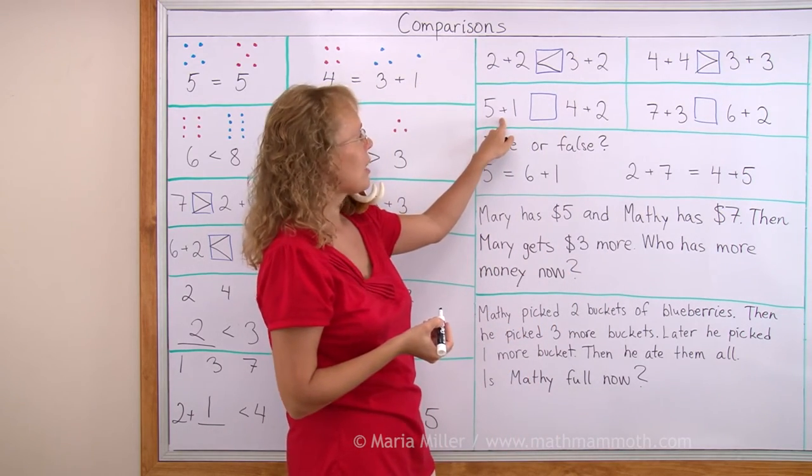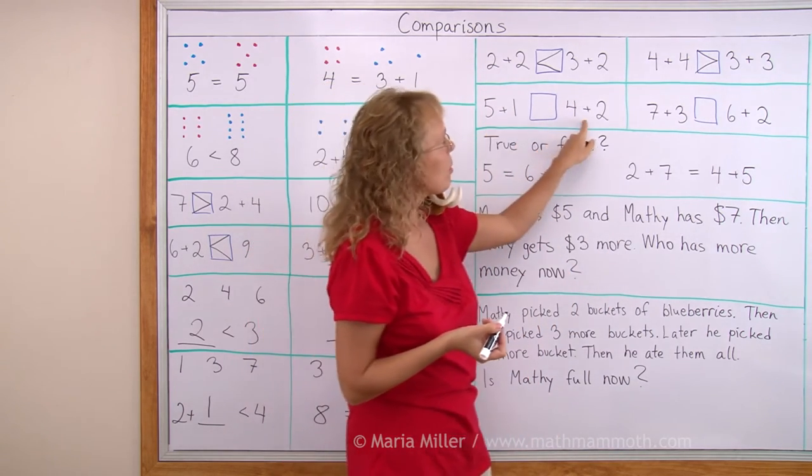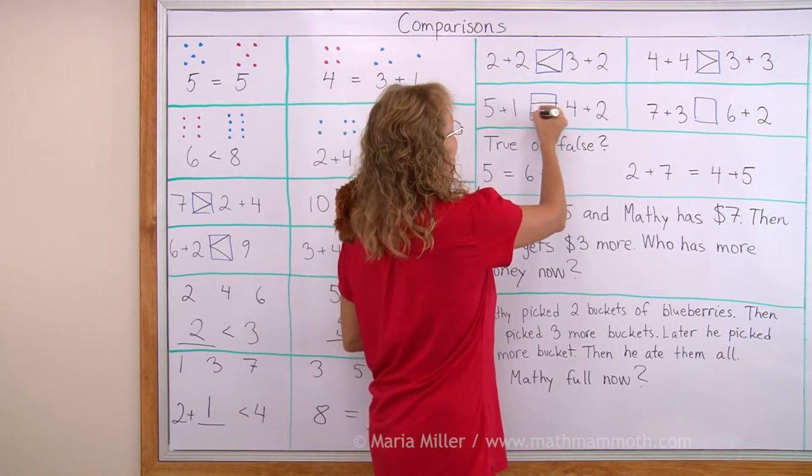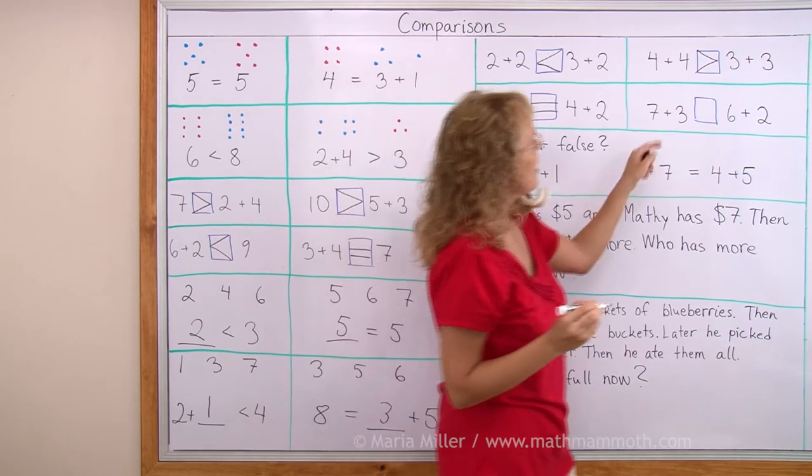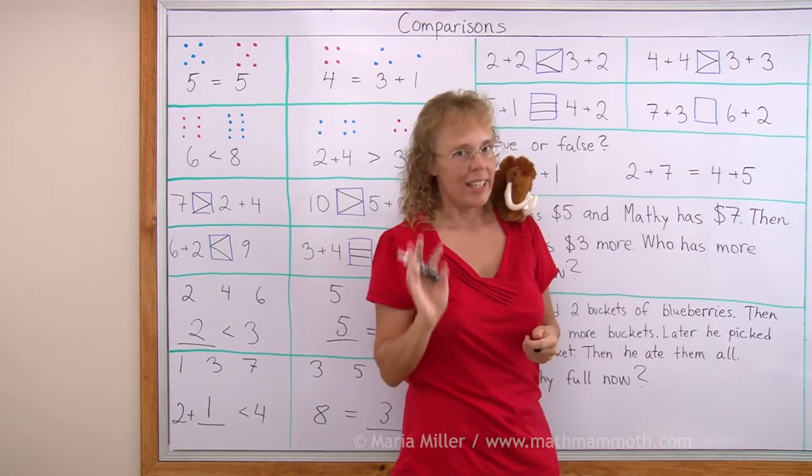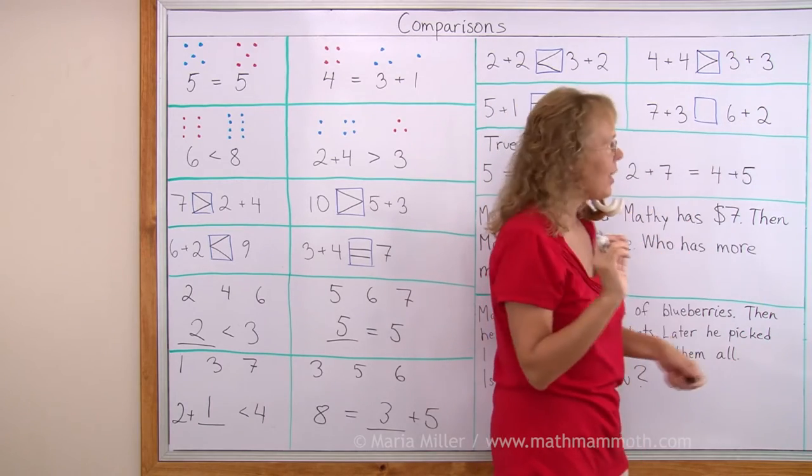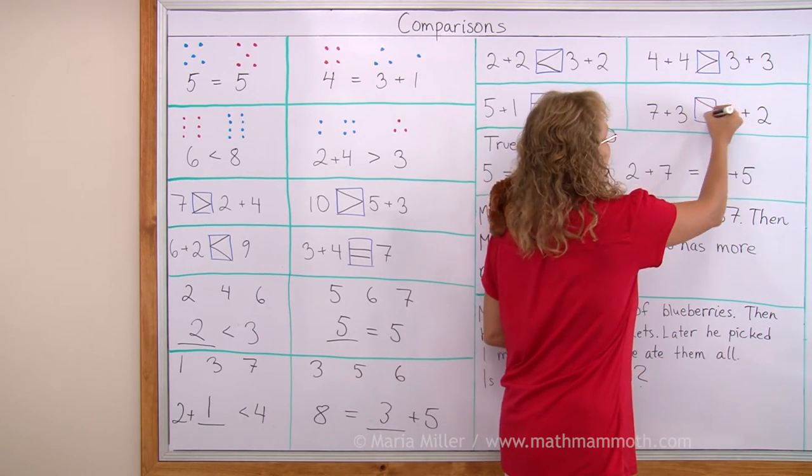5 plus 1, well that's 6. 4 plus 2, also 6. So these two are equal. Then 7 plus 3 makes 10. 6 plus 2 makes 8. 10 is greater than 8. That way.